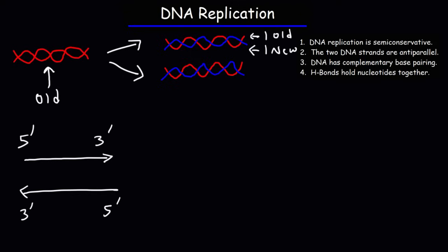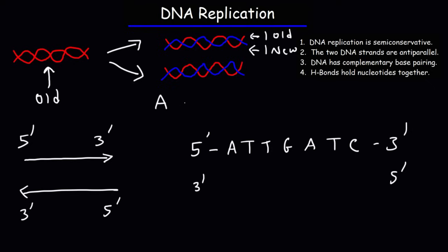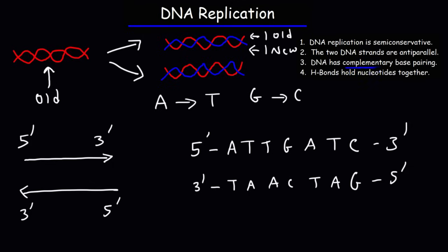The DNA strands are also complementary — they have complementary base pairing. For instance, if the nucleotide sequence of the first strand is A, T, T, G, A, T, C, we can predict the sequence of the other strand. In DNA, A always pairs with T and G always pairs with C, and vice versa. So A pairs with T, T pairs with A, G pairs with C, A pairs with T, and C pairs with G. Given one strand's sequence, we can write the nucleotide sequence of the other strand.